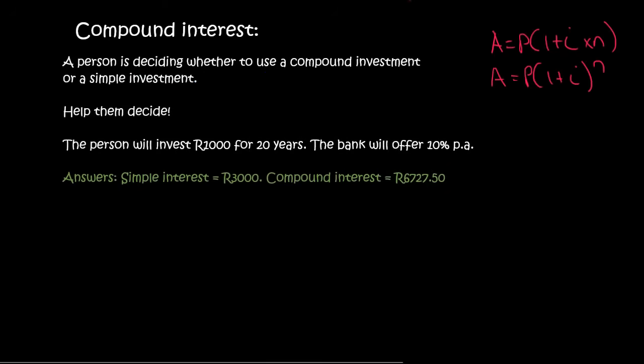Here's quite a cool exercise. We have to help someone decide whether they should use compound or a simple interest investment. The person will invest a thousand rand for 20 years and the bank will offer 10 percent per year. I would highly suggest that you pause the video and try it yourself. The answers are at the bottom so see if you can get to the answers.